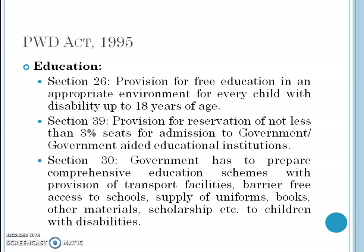We will discuss here the PWD Act 1995, which is the law made for physically handicapped people. The first major section is about education. Section 26 of this act says there shall be provision for free education in an appropriate environment for every child with disability up to 18 years of age. For normal children, free education is given from 7 to 14 years, but if the child is disabled, it extends to 18 years.